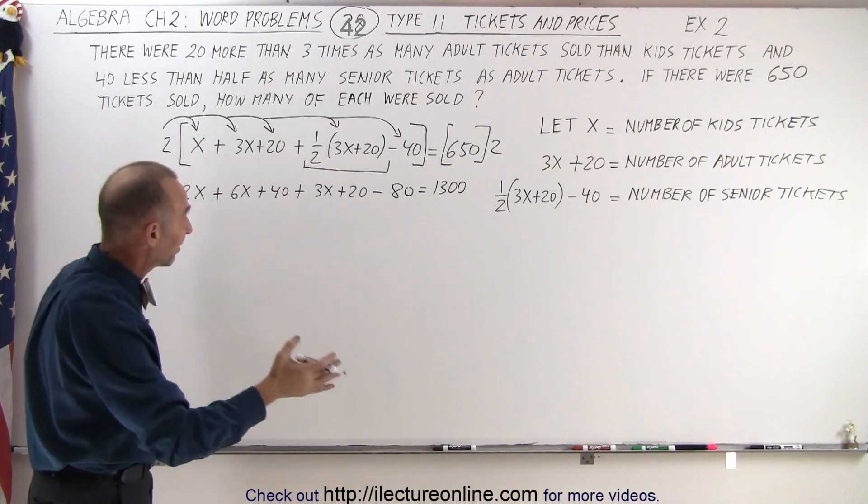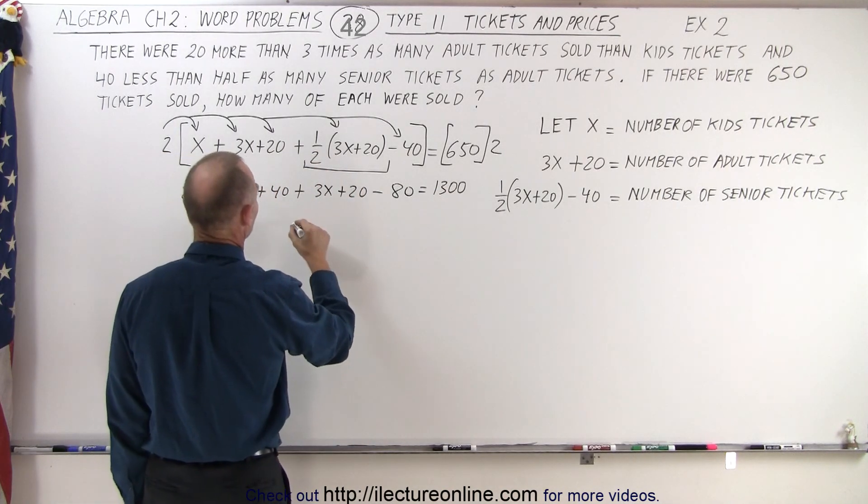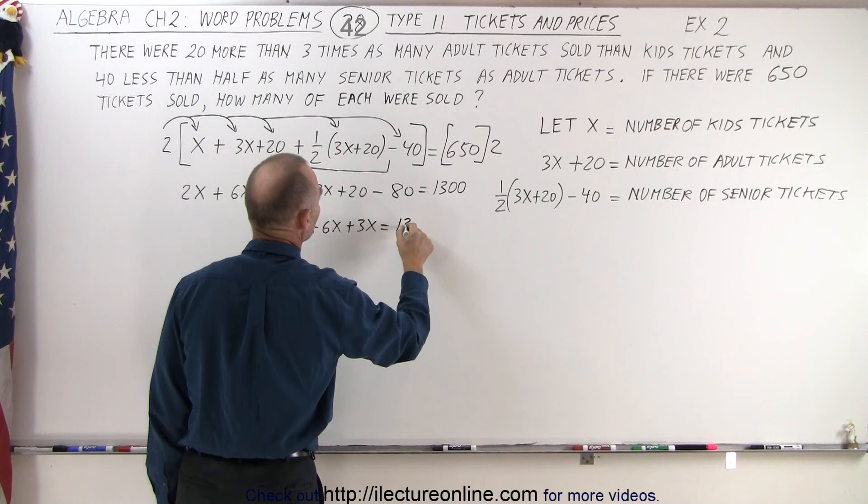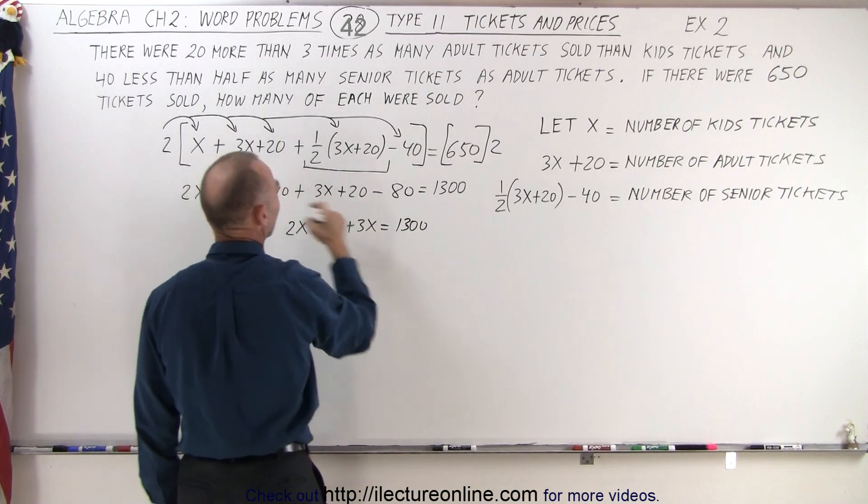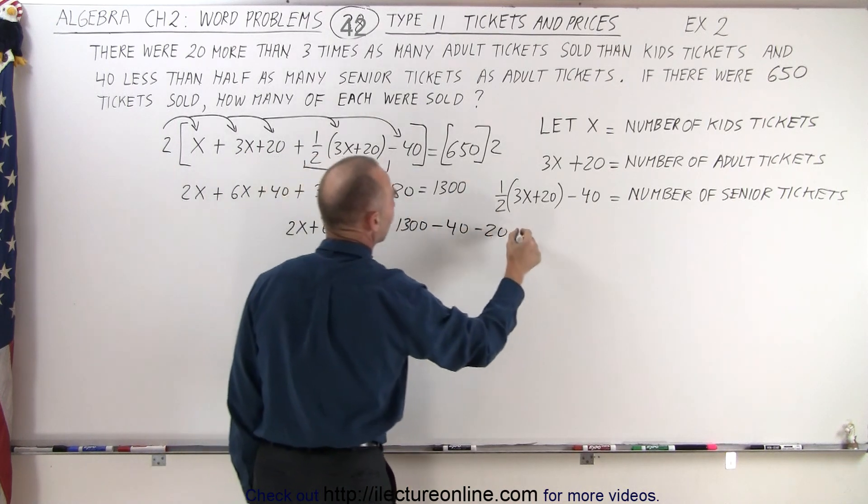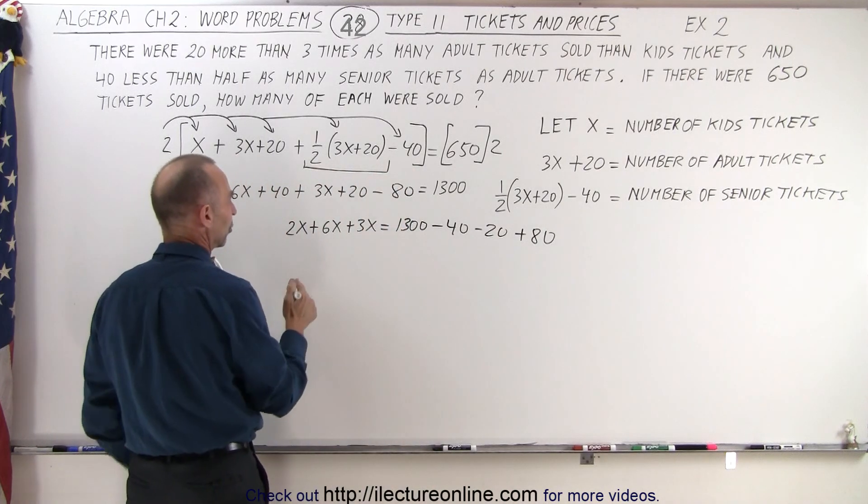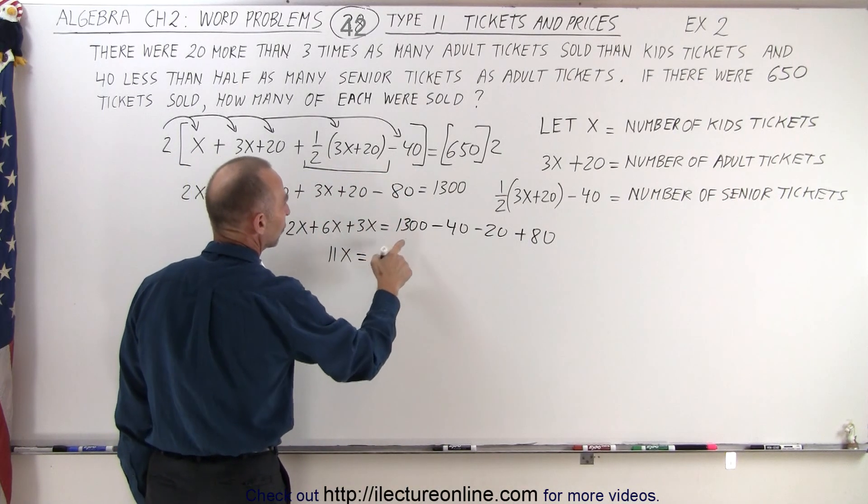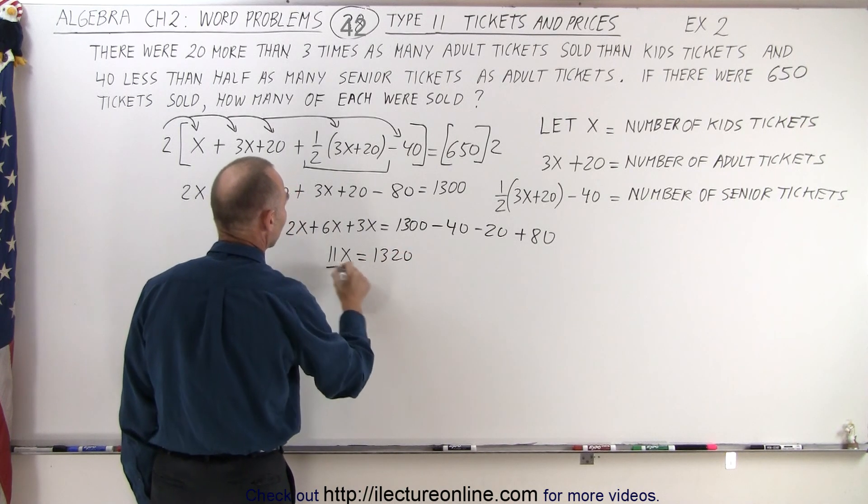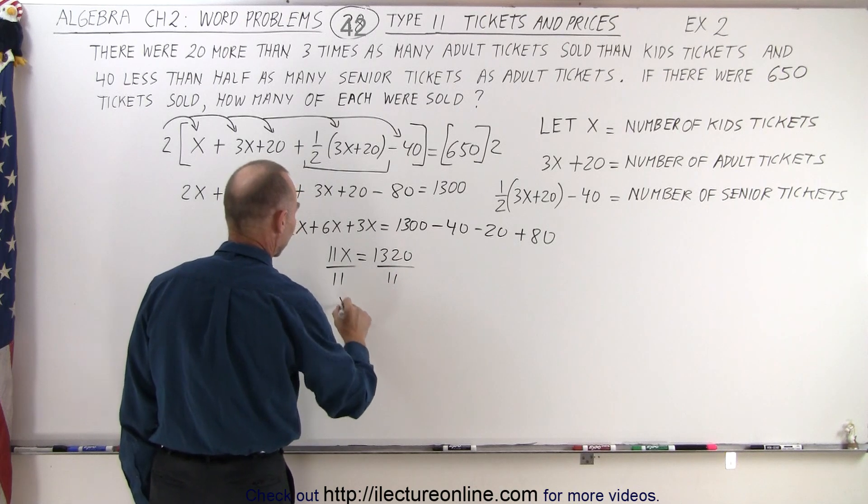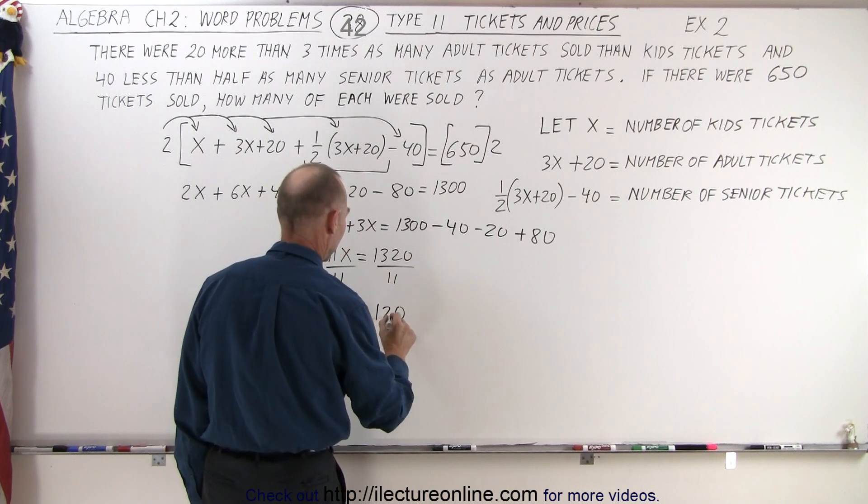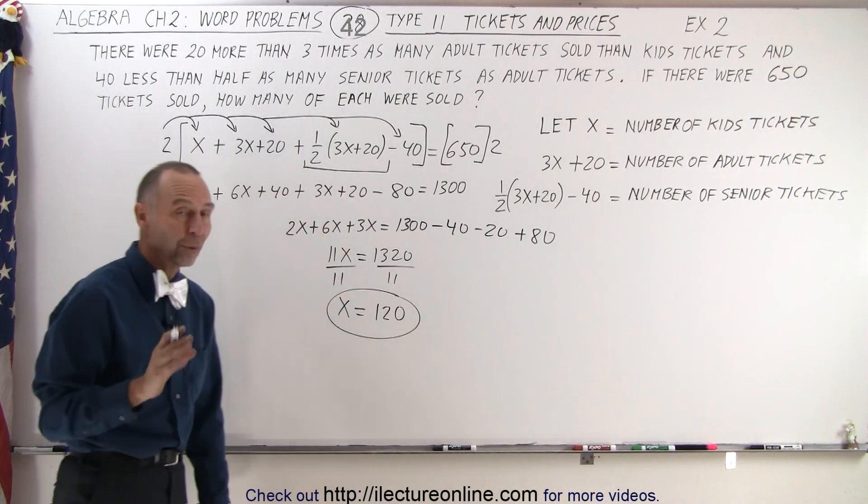Now we move all the numbers to one side, leave all the x's on this side. So here we have 2x + 6x + 3x is equal to 1300 minus 40, when we move the 40 across, minus 20, and plus 80. Combining like terms, that would be 11x is equal to 1320. And if we divide both sides by 11, it looks like x is equal to 120. So x equals 120.